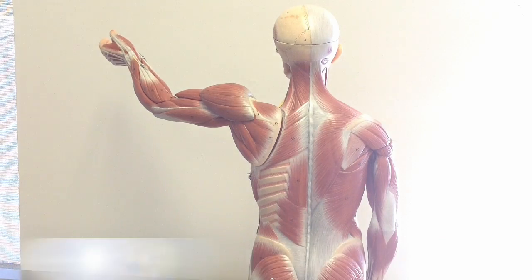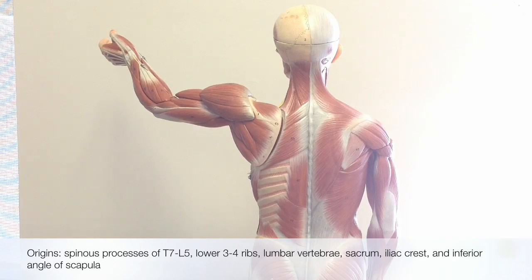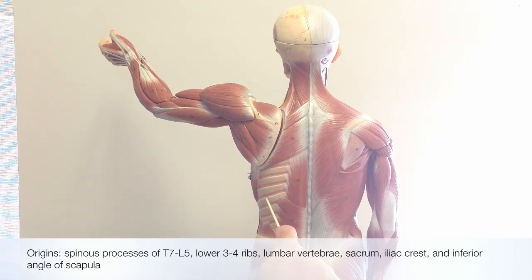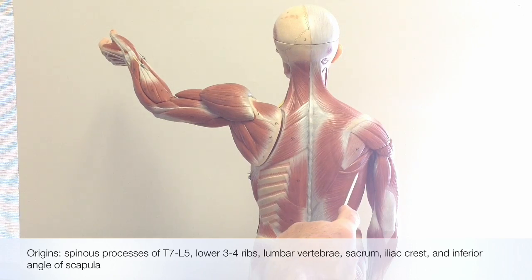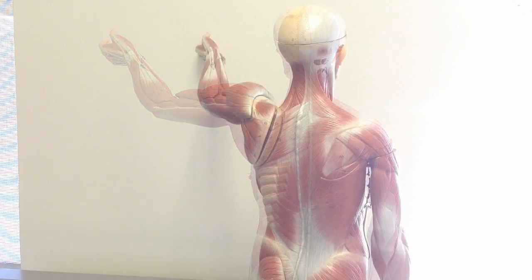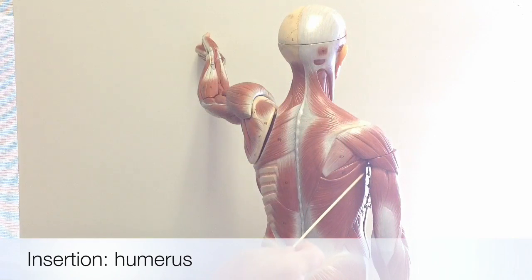Its many origins include the spinous processes of vertebrae from T7 down through the five lumbar vertebrae, the lower three to four ribs, as well as the lumbar vertebrae themselves and the sacrum, the iliac crest of the coxal bone, and the inferior angle of the scapula. It inserts onto the humerus.